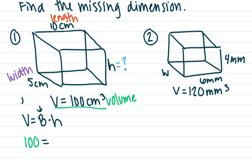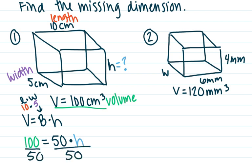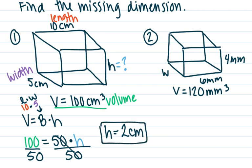Big B is length times width: 10 times 5 equals 50. I don't know my height, so I have the equation 100 equals 50 times H. I divide both sides by 50 — the 50s cancel — and I'm left with H. 100 divided by 50 is 2. My height is 2 centimeters. This is a single dimension, so the unit is just centimeters with no exponent.